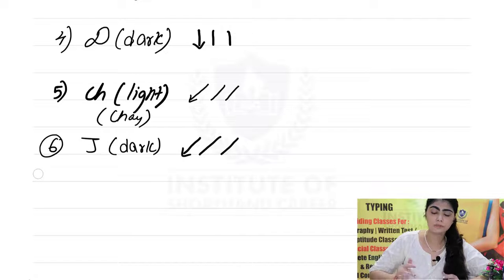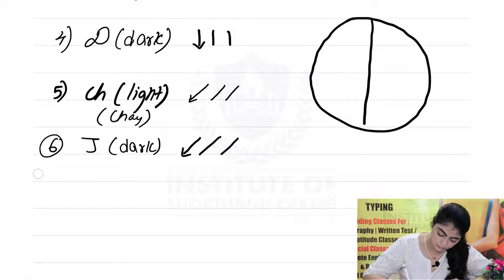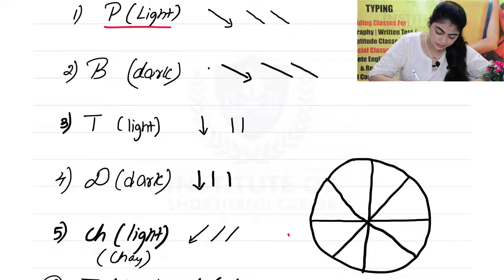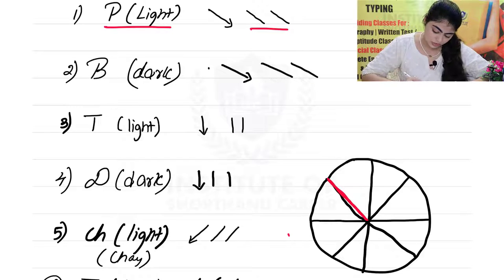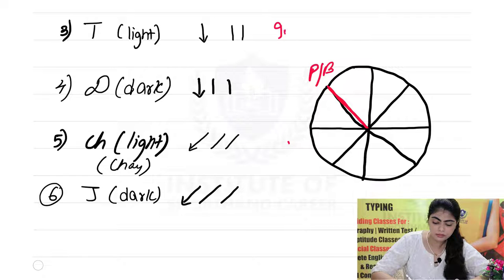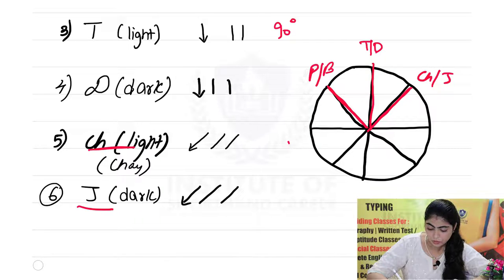Now I'll explain through a diagram. Make a circle. P alphabet is made in this direction — this part of the circle. B is the same direction but darker. Next, T is a straight line at a 90-degree angle; D is darker. CH and J occupy this part of the circle — CH is light and J is the dark version. I hope this is clear.